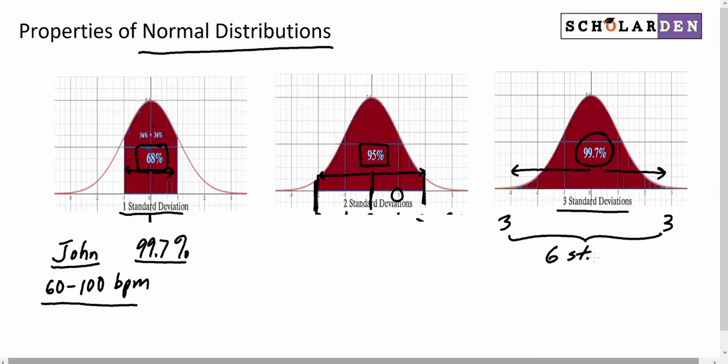Six standard deviations. So if his highest measurement is 100 and lowest is 60, or those are the outer bounds of this 99.7% range, we know that has to span six standard deviations. So 100 minus 60 divided by 6 should give us the distance of one standard deviation. So that's 40 over 6, which comes out to 6.67.